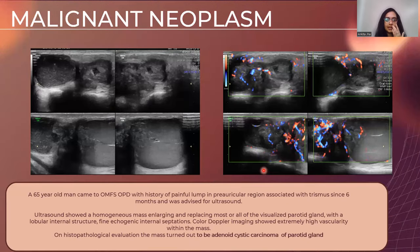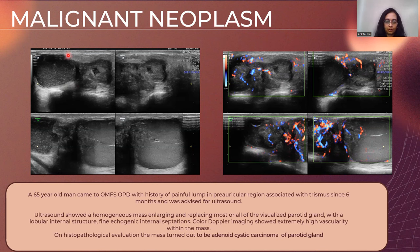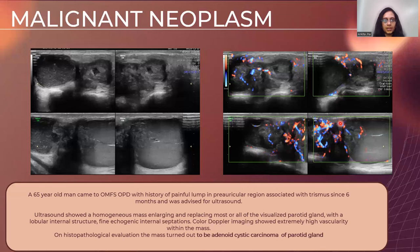A similar case involved a 65-year-old patient with a history of painful lump and trismus since six months. On ultrasound, a solid-cystic lesion was seen replacing most of the parenchyma of the parotid gland, showing a few necrotic areas within and appearing hypervascular on color Doppler studies. The patient underwent a superficial parotidectomy and on histopathology it was determined to be an adenoid cystic carcinoma.